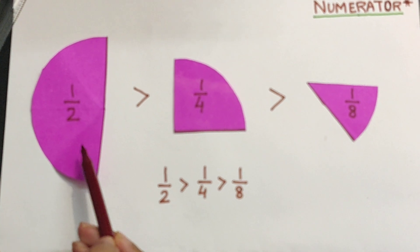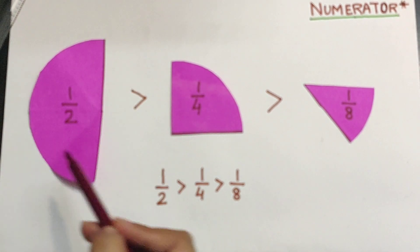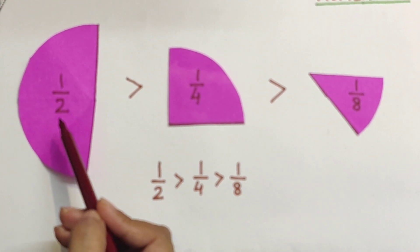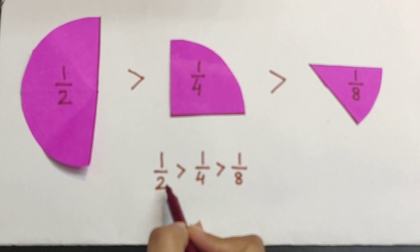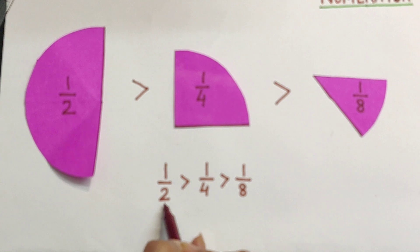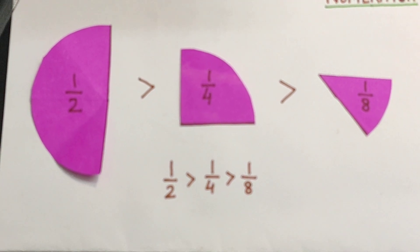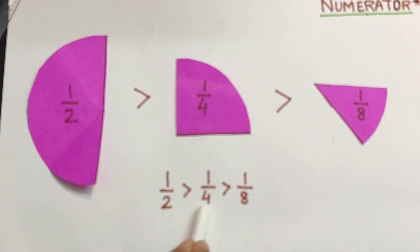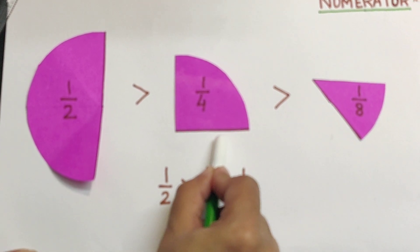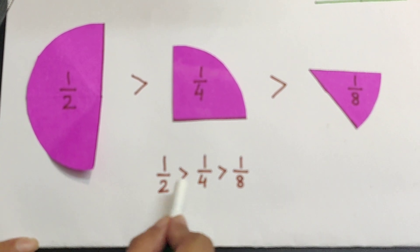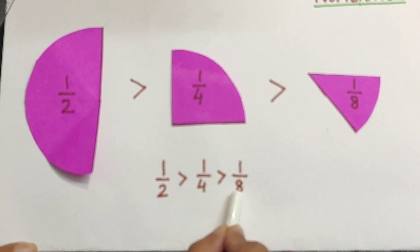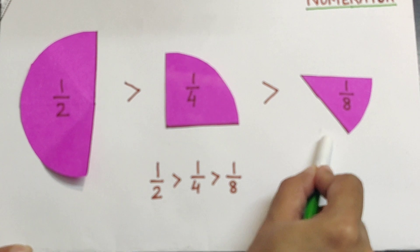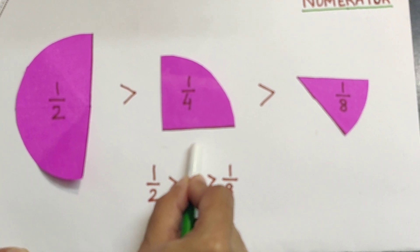Now look here — 1 upon 2 represents the highest fraction among the three fractions. But if you look at the denominator, the denominator 2 is the smallest one. As the denominator increases, the fraction decreases. So 1 by 4 is smaller than 1 by 2. And when the denominator increases to 8, 1 by 8 is even smaller than 1 by 4.